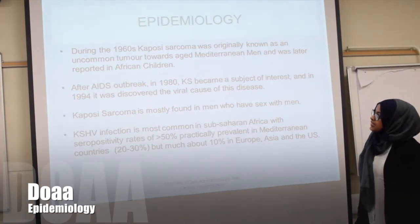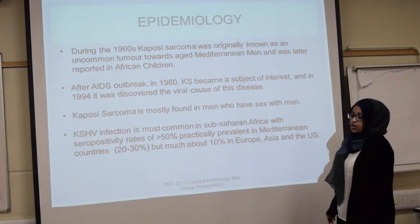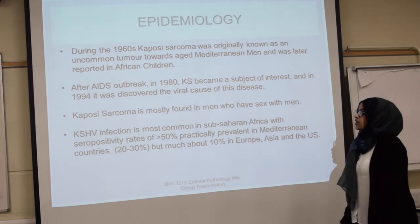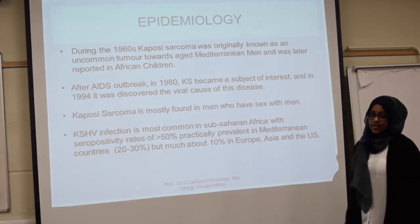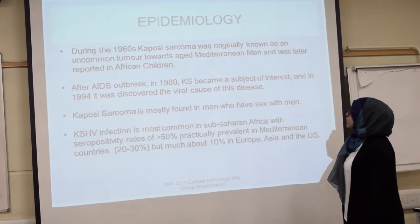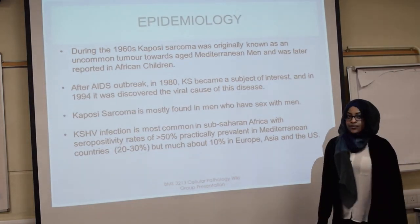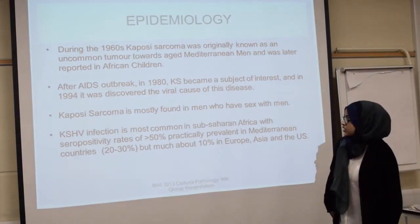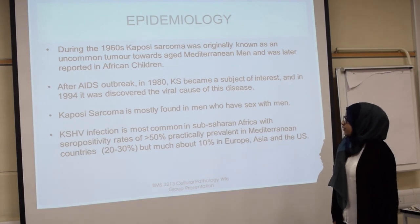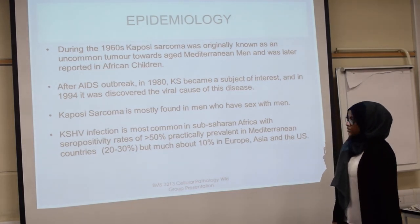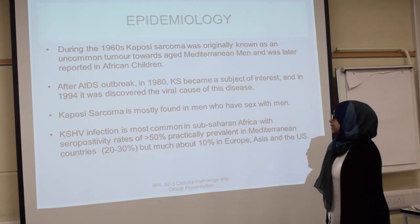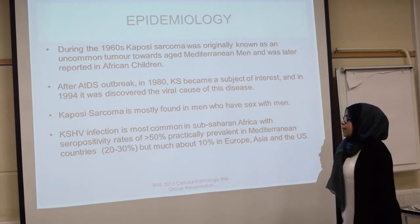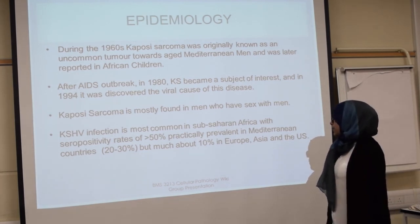During the 1960s, Kaposi's sarcoma was originally known as an uncommon tumor affecting Asian and Mediterranean men, and was later reported in African children. After the AIDS outbreak in the 1980s, Kaposi's sarcoma became a subject of interest, and in 1994 the viral cause of the disease was discovered. HIV infection is most common in sub-Saharan Africa, with seropositivity rates greater than 50%, particularly prevalent in Mediterranean countries at 20–30%, and around 10% in Europe, Asia, and the US.